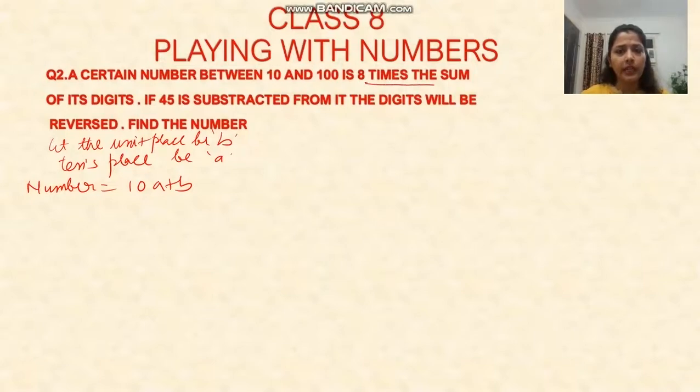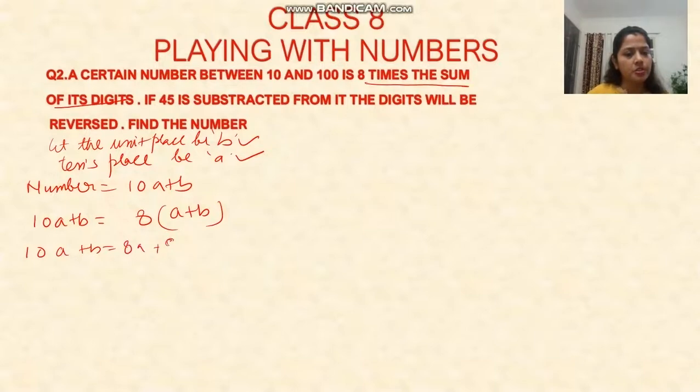Our number will be 10a plus b. The question says this number is eight times the sum of its digits. Sum of digits means a plus b. If we multiply this sum by 8, we get the number. So 10a plus b equals 8(a plus b). Solving: 10a plus b equals 8a plus 8b, so 2a equals 7b, therefore a equals 7b divided by 2.